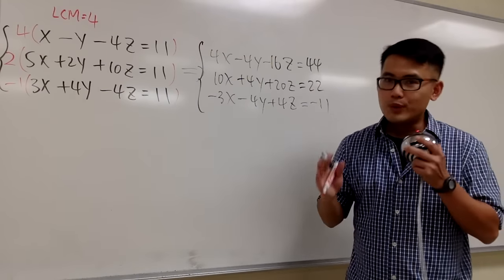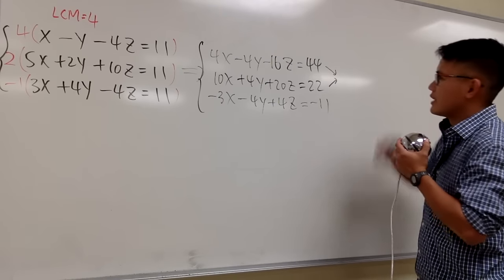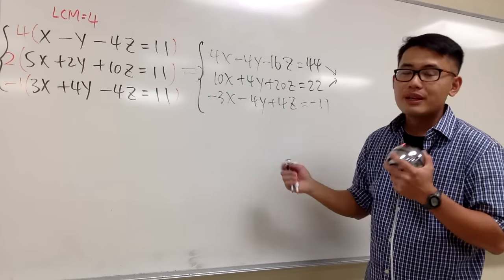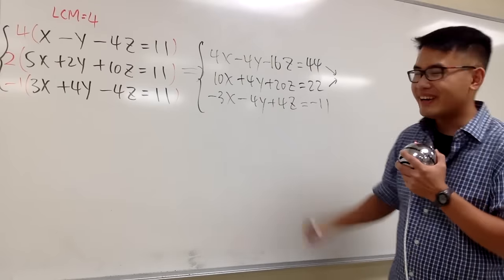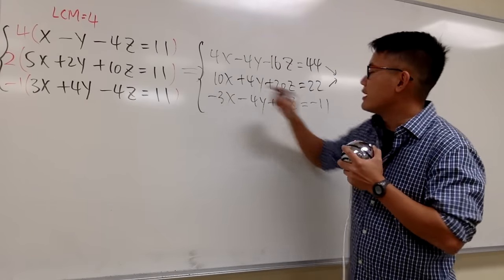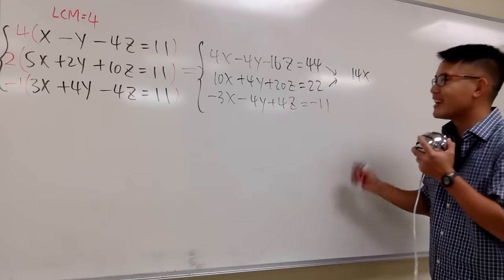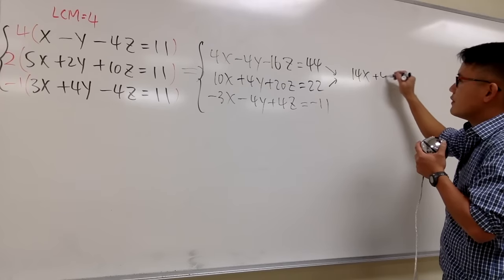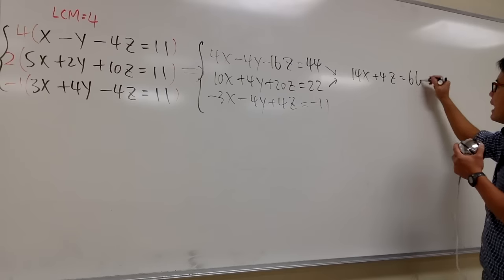Now we are ready to add the first two equations together. You will see the y terms cancel out. I'm not going to cross them out because I need a second equation for the second part. So: 4x plus 10x gives us 14x, the y terms disappear, negative 16z plus 20z is positive 4z, and 44 plus 22 gives us positive 66.